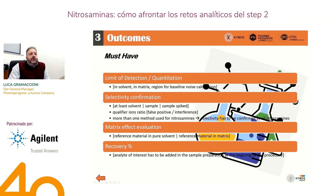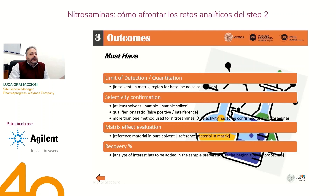Another parameter that in my opinion has to be included in the final report delivered by the CRO is the selectivity confirmation: injection of solvent, sample, and sample spiked with the analyte of interest, and the evaluation of the qualifier ion ratio in order to avoid false positives or interference. If more than one method will be used for analysis of nitrosamines, selectivity has to be confirmed for all nitrosamines involved in all the different methods. Another important parameter is the matrix effect evaluation — the difference in response for the analyte of interest when injected in pure solvent versus in the matrix.